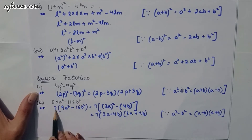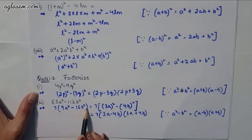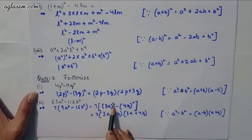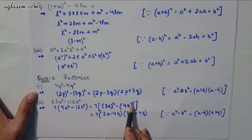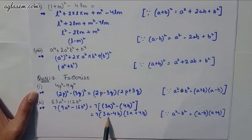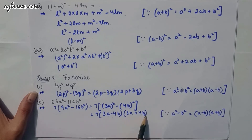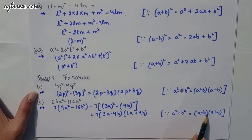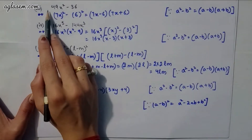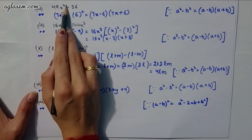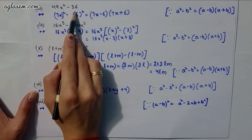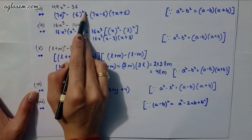Second part: 63a² − 112b². We factor out 7: 7(9a² − 16b²) = 7[(3a)² − (4b)²]. Applying a² − b² = (a − b)(a + b), the answer is 7(3a − 4b)(3a + 4b).